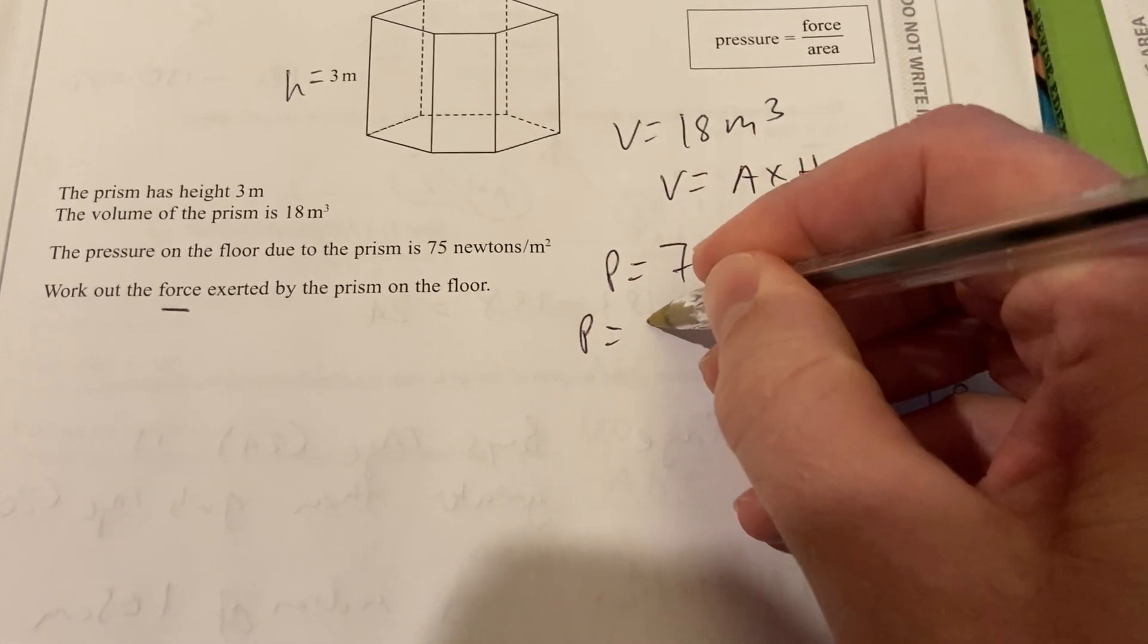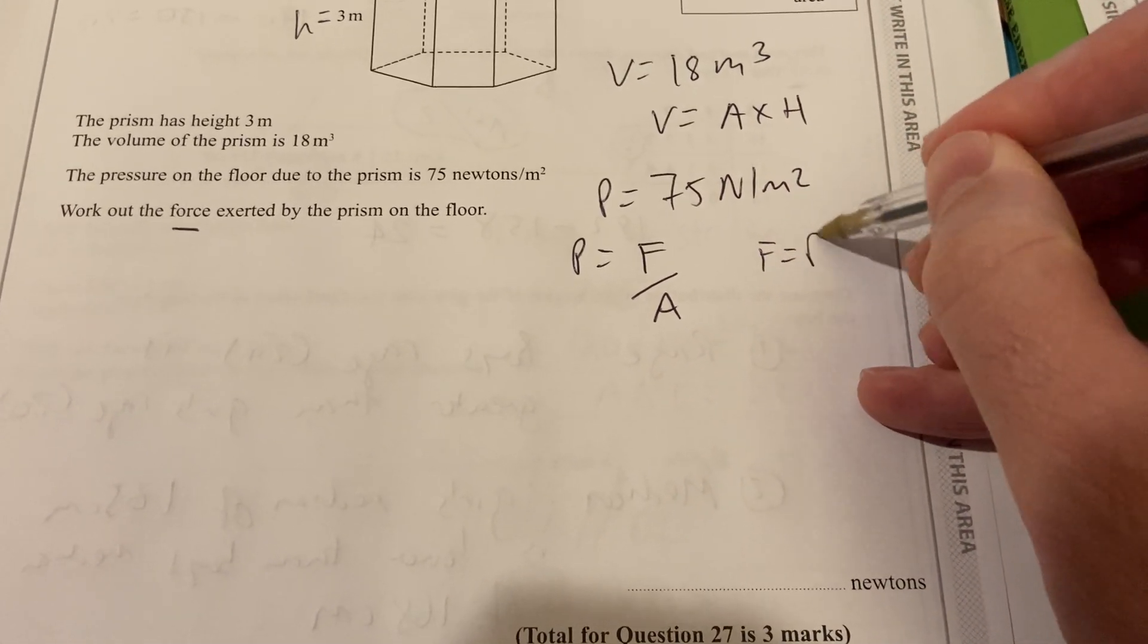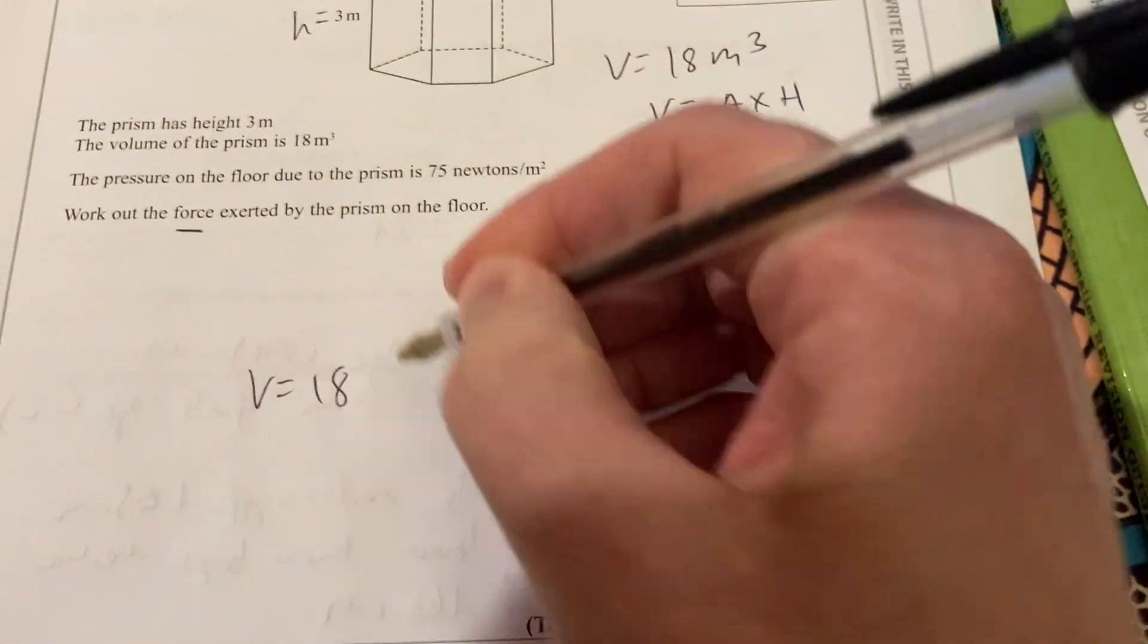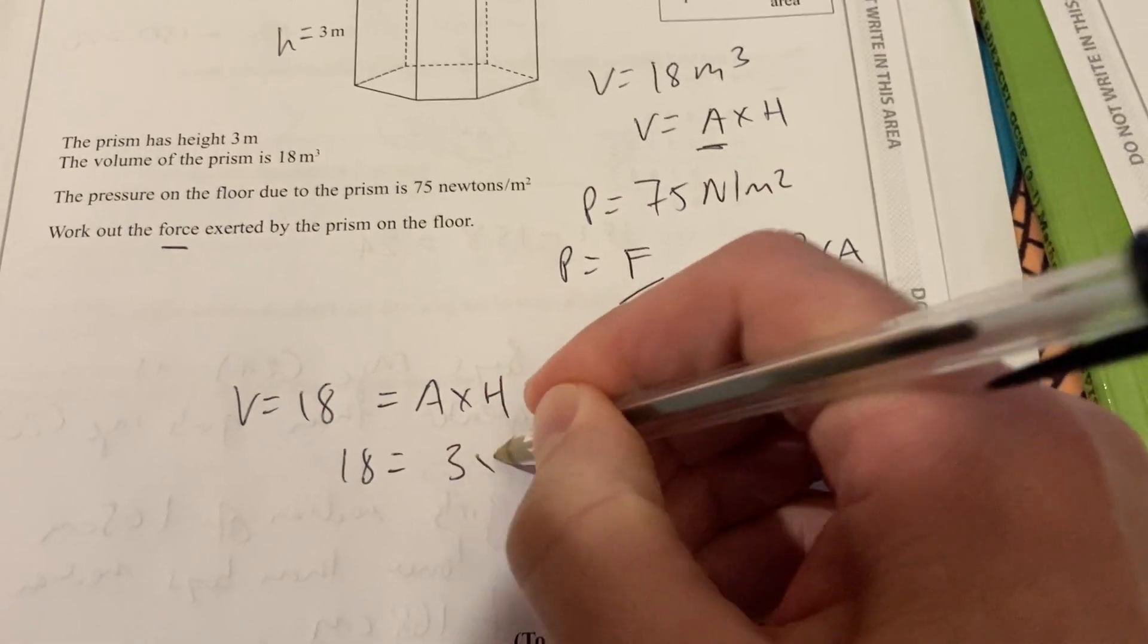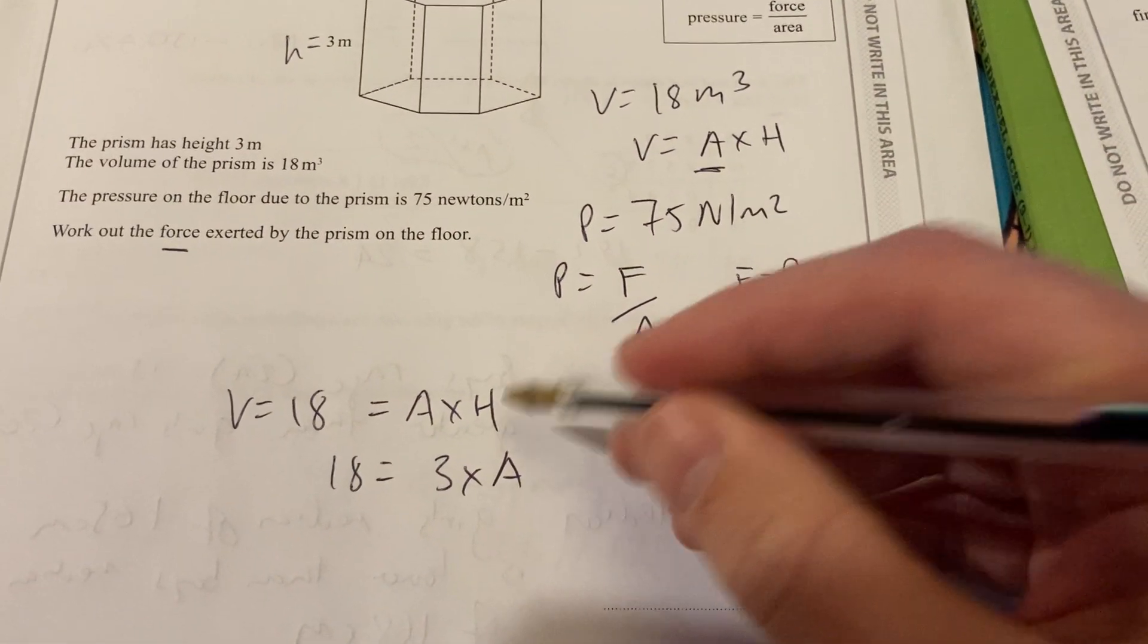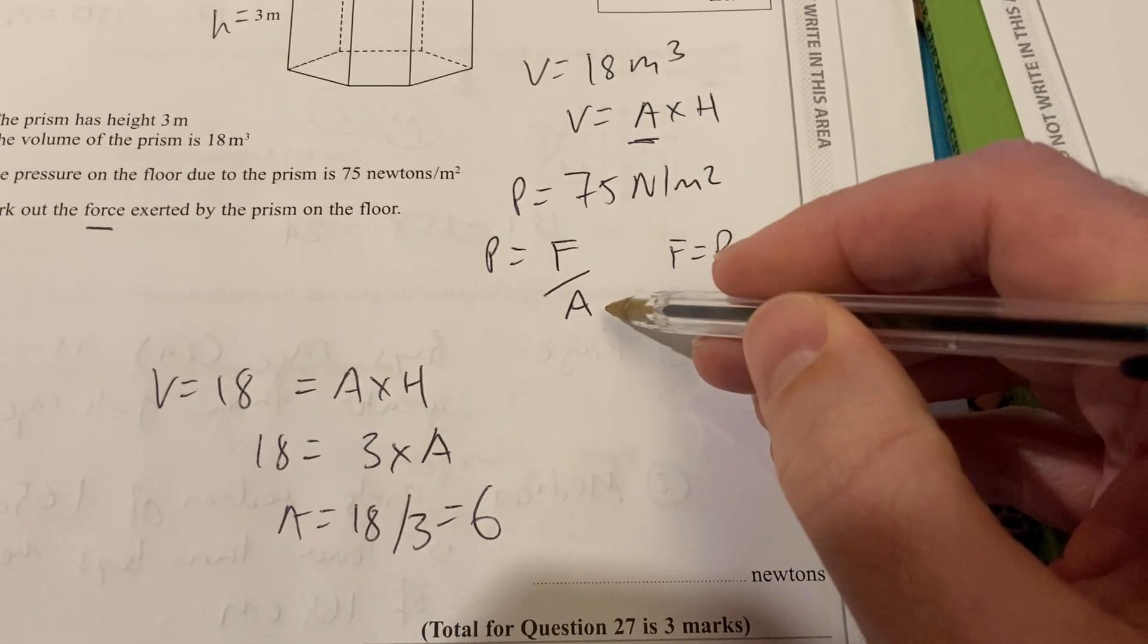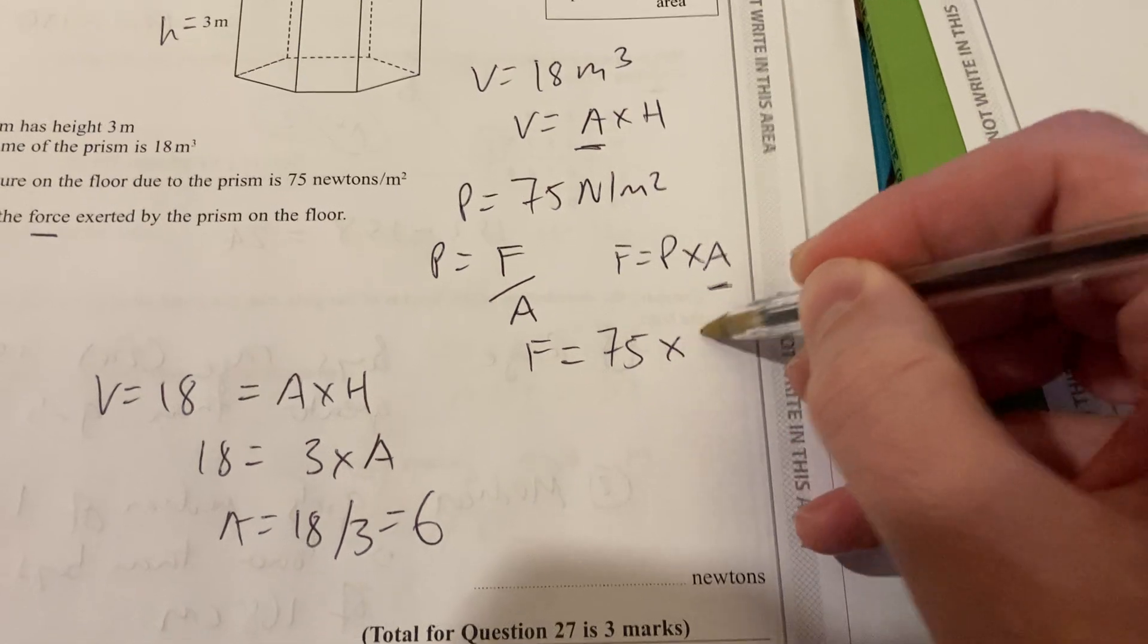So we know that pressure equals force over area. That's given to us. I'm going to rearrange that. Because they want to find the force. So the force is pressure times area. And that's where we combine the two formulae. I've got area there and area here. So I have to use this one to work out the area. So if the volume was 18, and I know that is area times the height, 18 is then equal to 3 times the area. Because they told us the height is 3. I've used a capital there, lowercase. It's the same one. So now the area is 18 divided by 3, which is 6. I'm now going to put that into this formula.